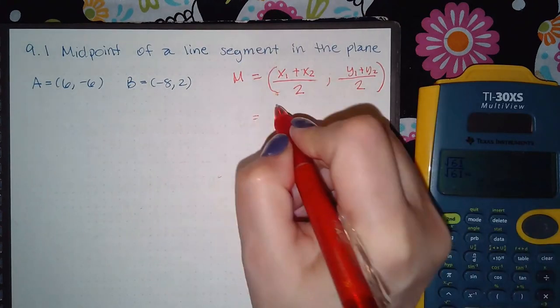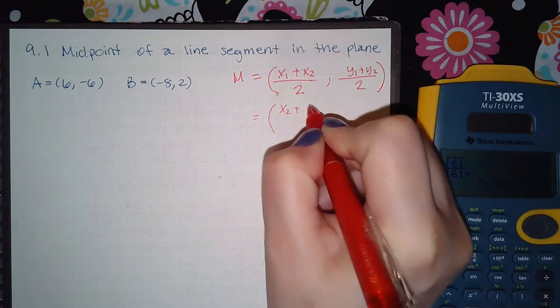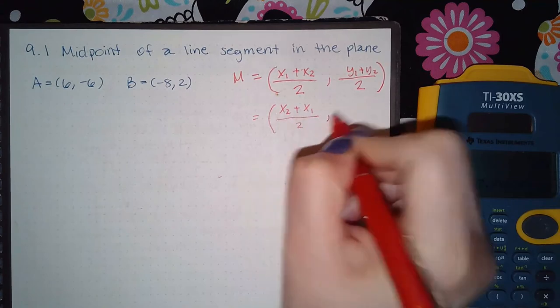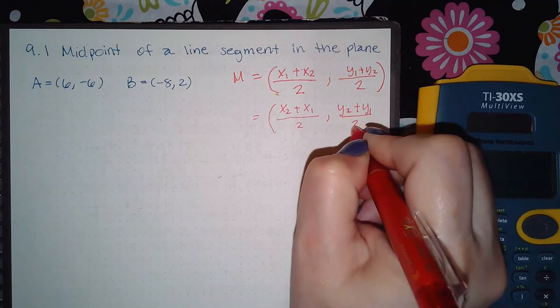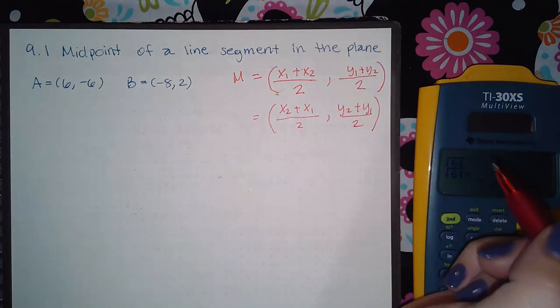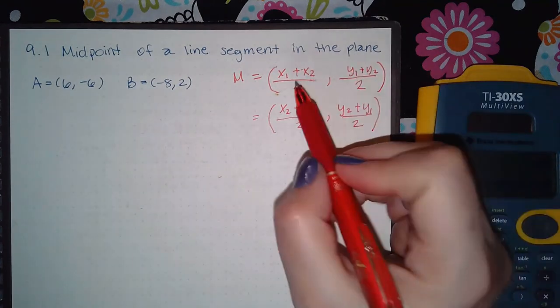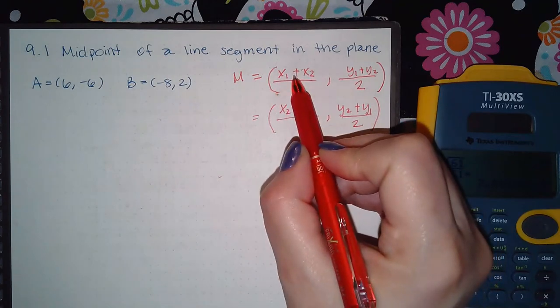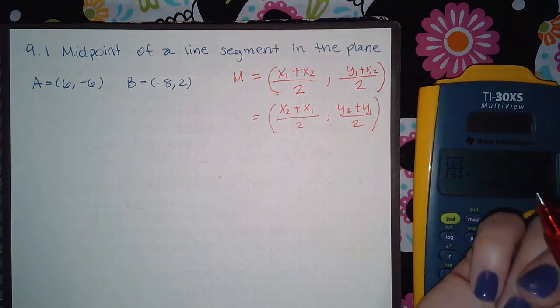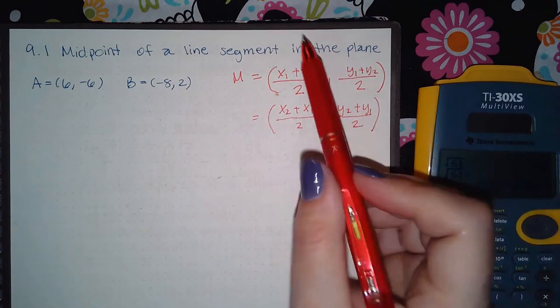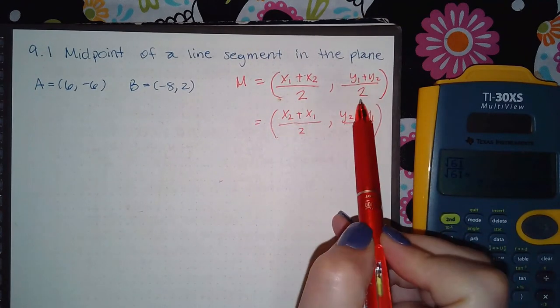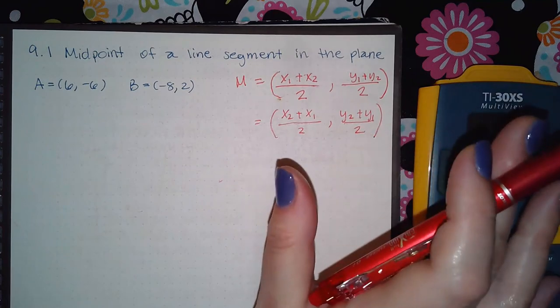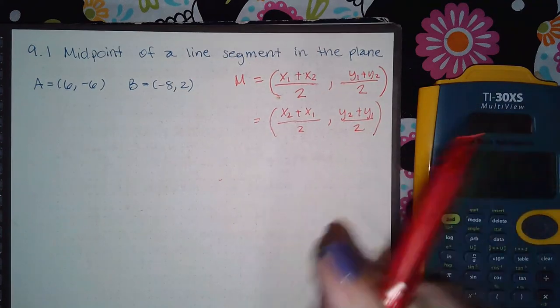Now because it's addition, it doesn't matter if you use this formula. If you look online or in a book and happen to see them in the other order, it doesn't matter—they're equivalent because which term is in front doesn't matter when you add. As long as you're adding the x's together over 2 and the y's over 2, you'll get the correct answer.